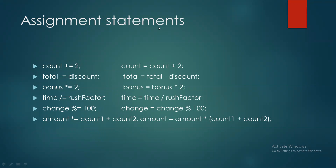Assignment operators کی مزید مثالیں: count += 2 مطلب count کی previous value میں 2 add ہوگا اور نئی value store ہو جائے گی — یہ count = count + 2 کے برابر ہے۔ total -= discount مطلب total میں سے discount minus ہوگا۔ bonus *= 2 مطلب bonus کو 2 سے multiply کریں۔ time /= rushFactor مطلب division۔ change %= 100 مطلب 100 کا remainder لیا جائے گا اور change میں store ہوگا — یہ percentage operator نہیں بلکہ modulus/remainder ہے۔